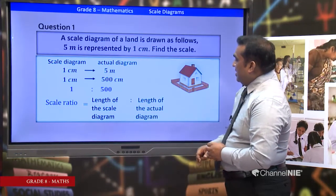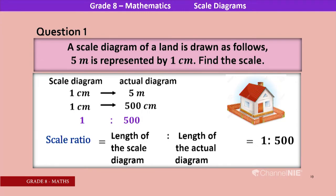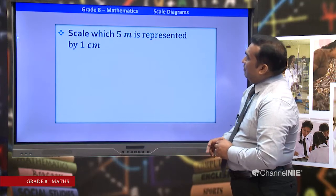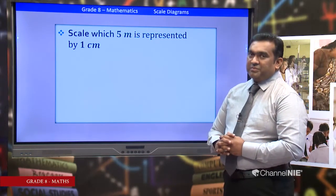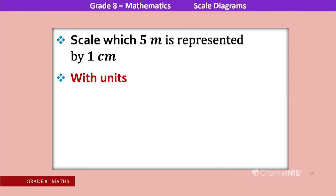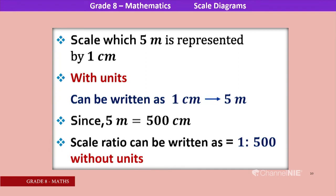Scale ratio equals length of scale diagram to length of actual diagram: 1 is to 500. The scale where 5 meters is represented by 1 centimeter can be written as 1 centimeter to 5 meters. Since 5 meters equals 500 centimeters, the scale ratio is 1 is to 500 without units.